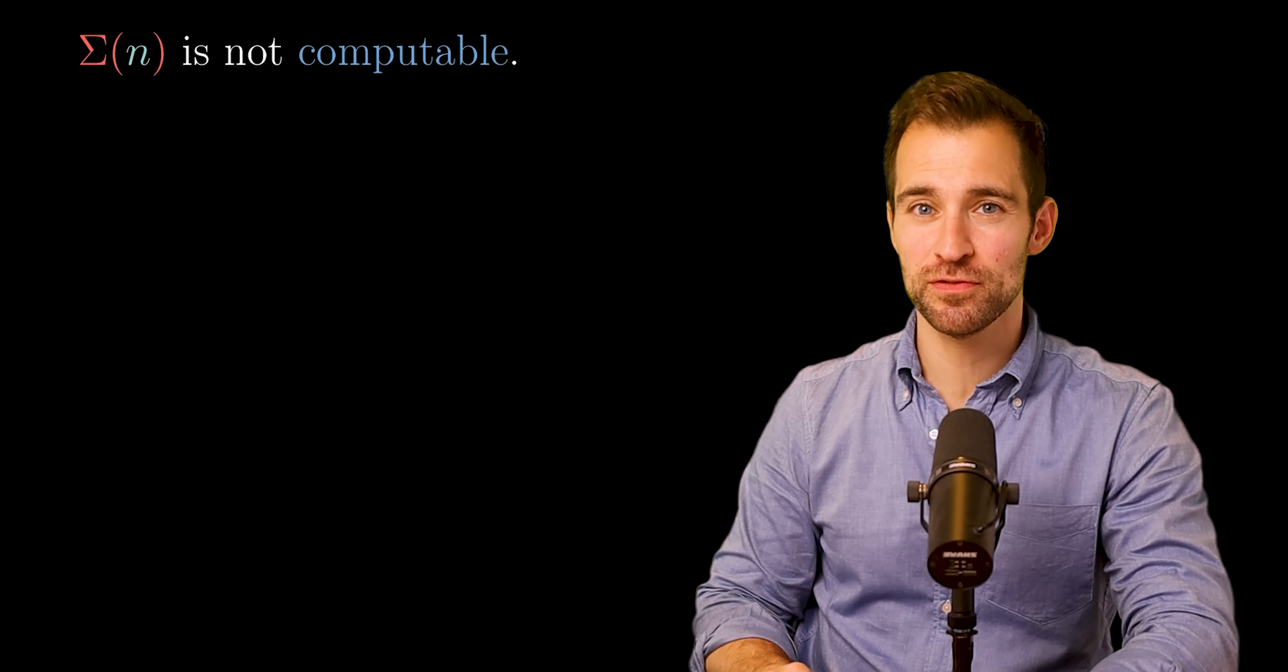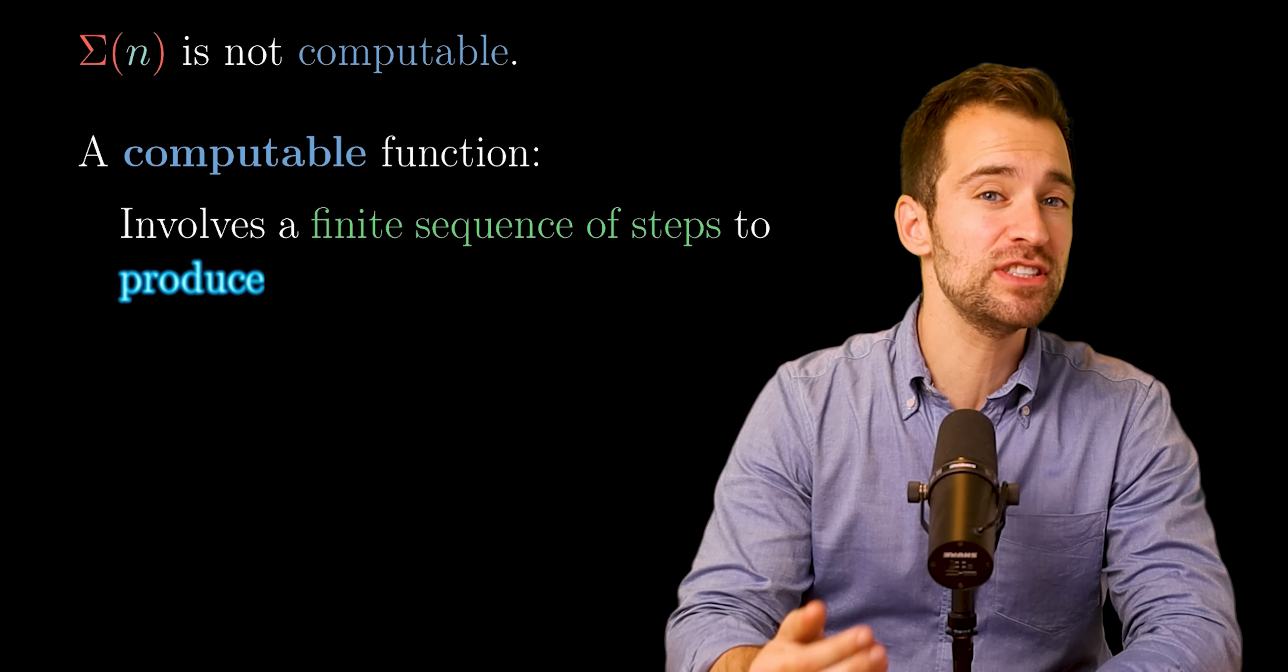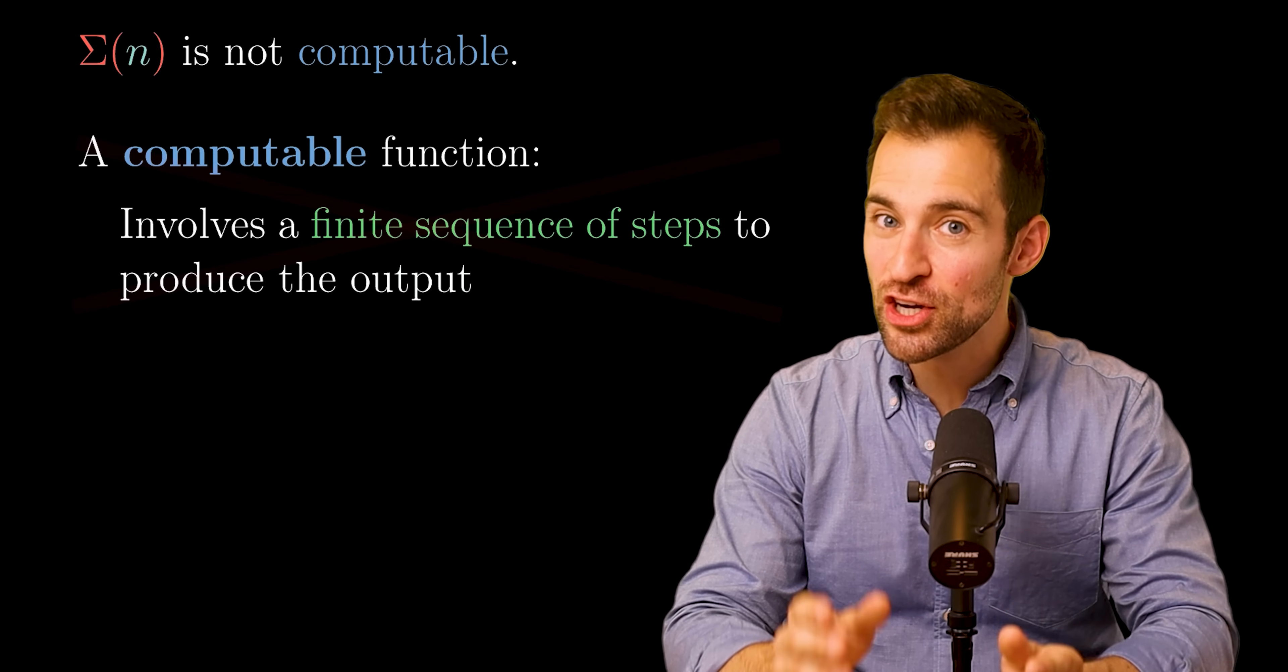Let's start with the fact that sigma n is not even a computable function. A computable function is one which involves a finite sequence of steps to produce the output from the input. And we don't have that.